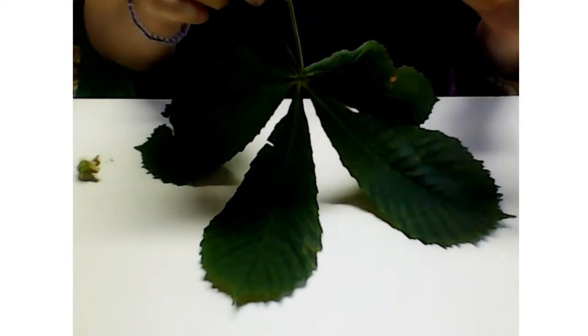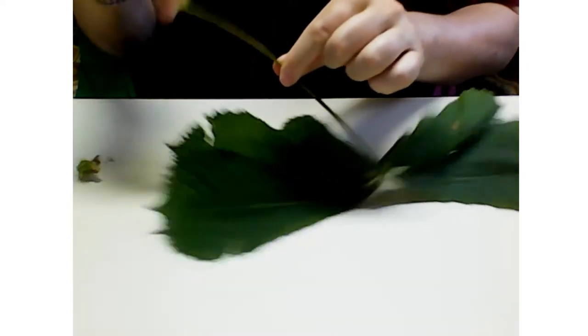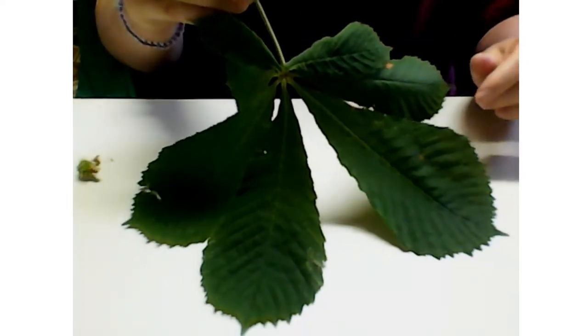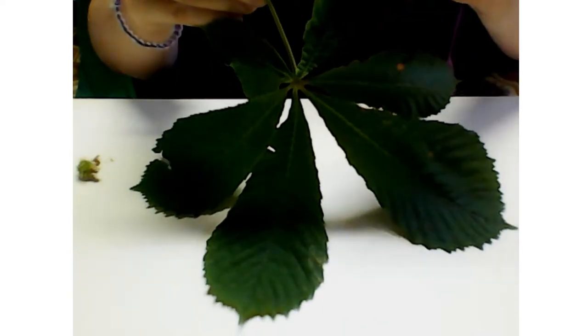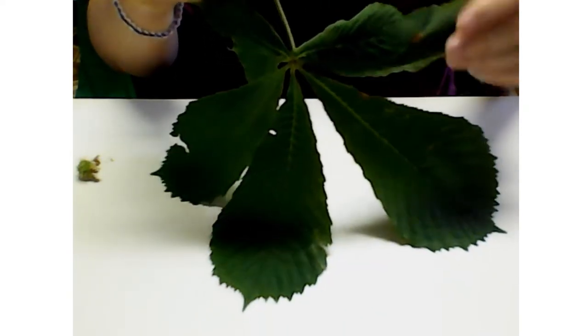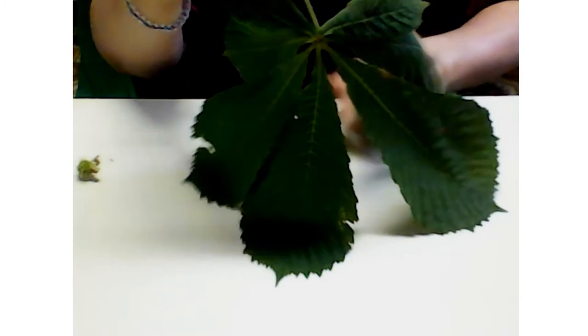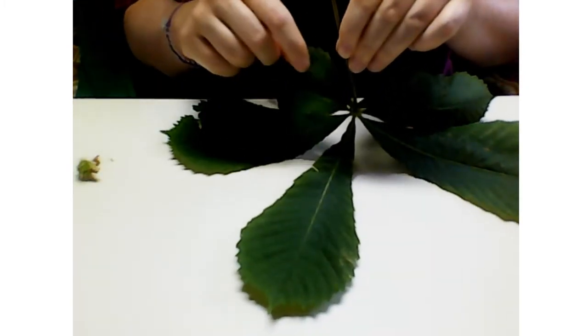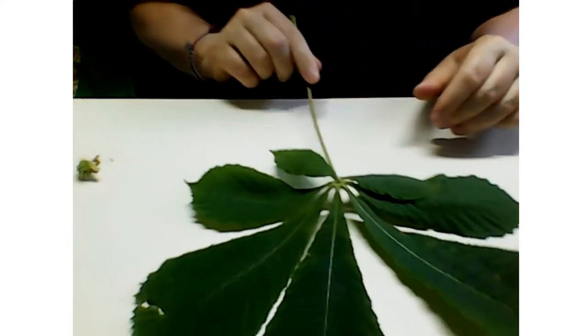So I was thinking we could count these leaves. This is a single stem from the buckeye tree and let's count how many leaves are on a single stem. One, two, three, four, five, six, seven leaves grew on one stem.